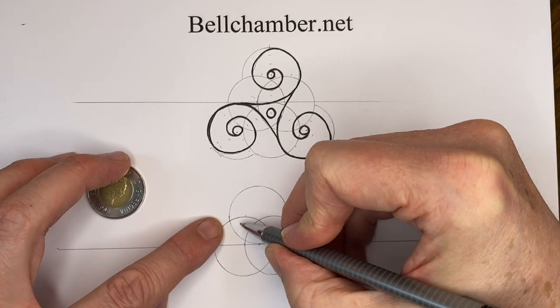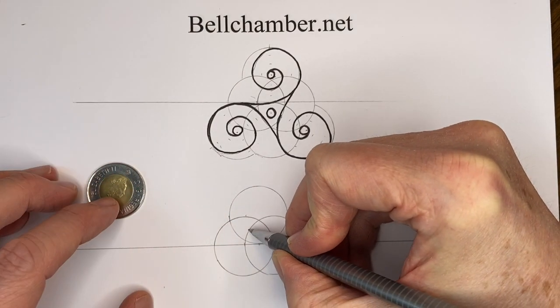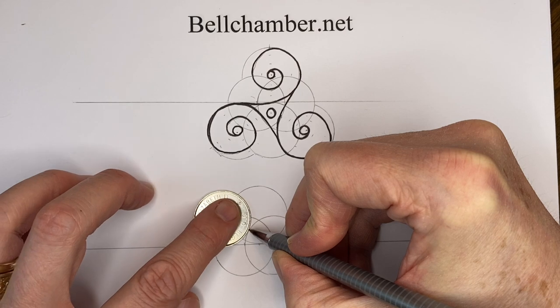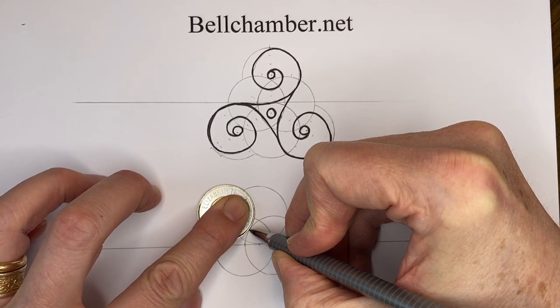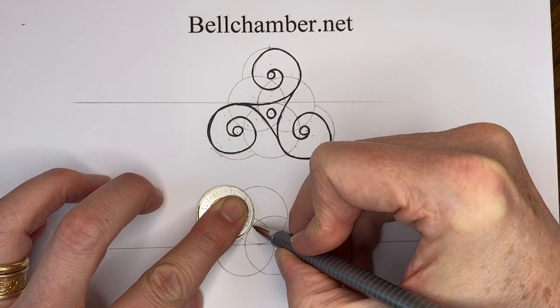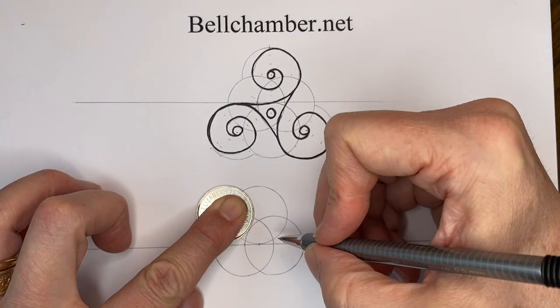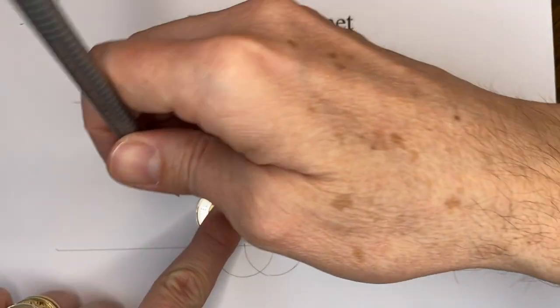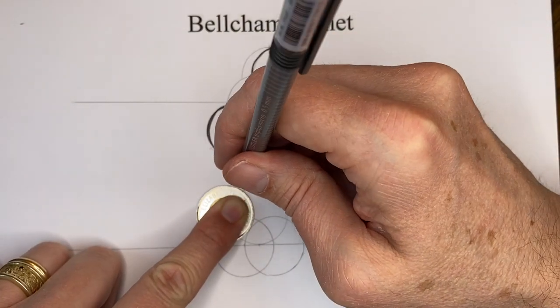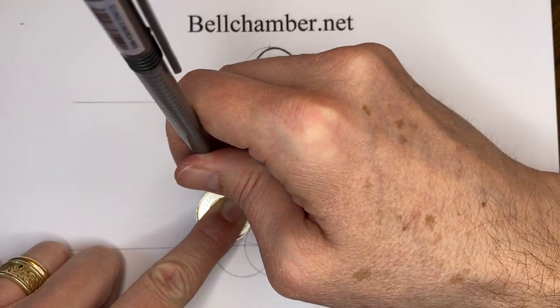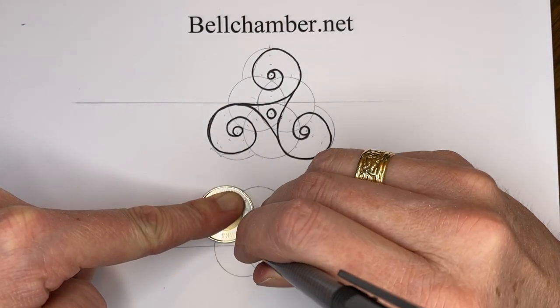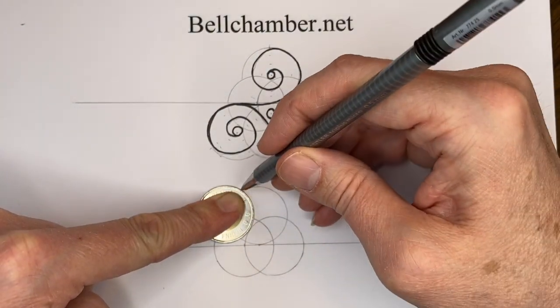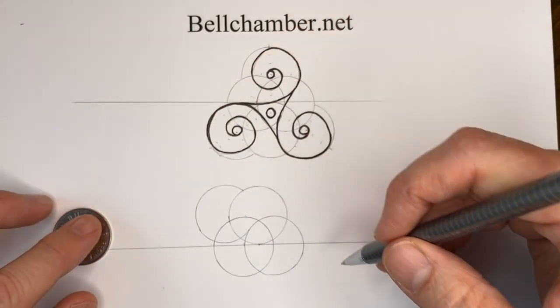Where this line is right here, just estimate where you think it is there. Bring in the coin. Move it till these two parts here are even. And we're going to mark a three-quarter turn going counterclockwise, starting at about three o'clock.